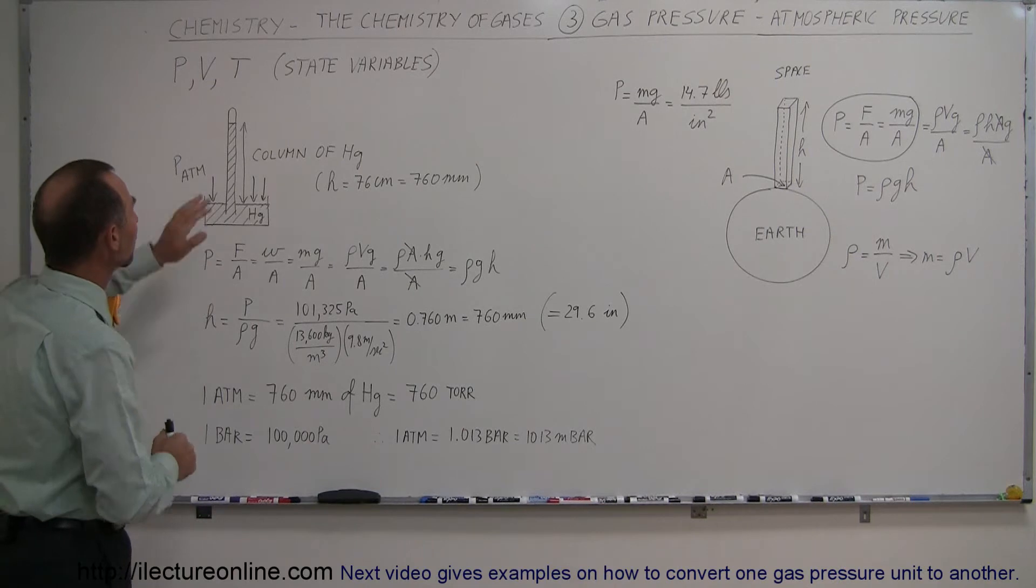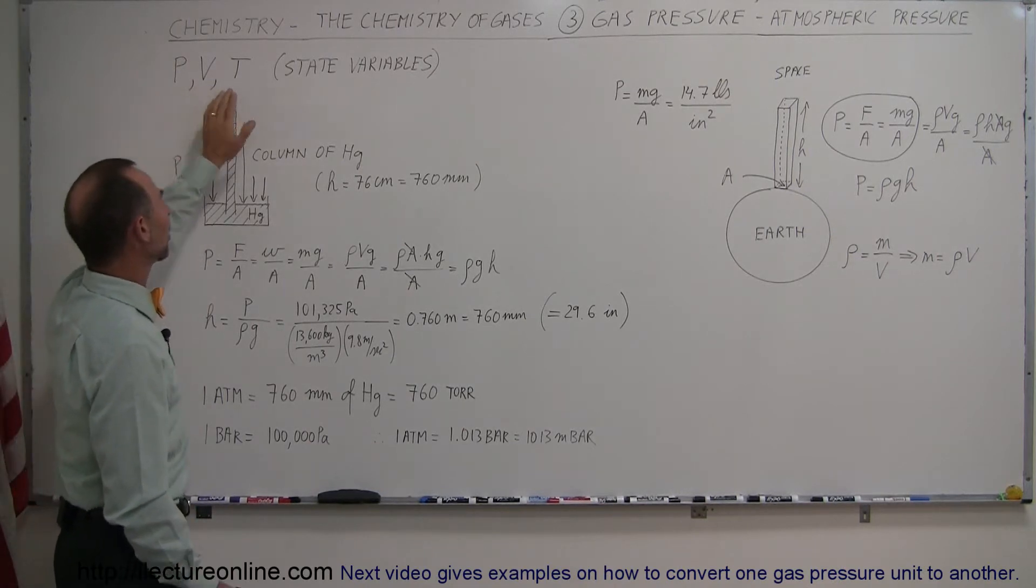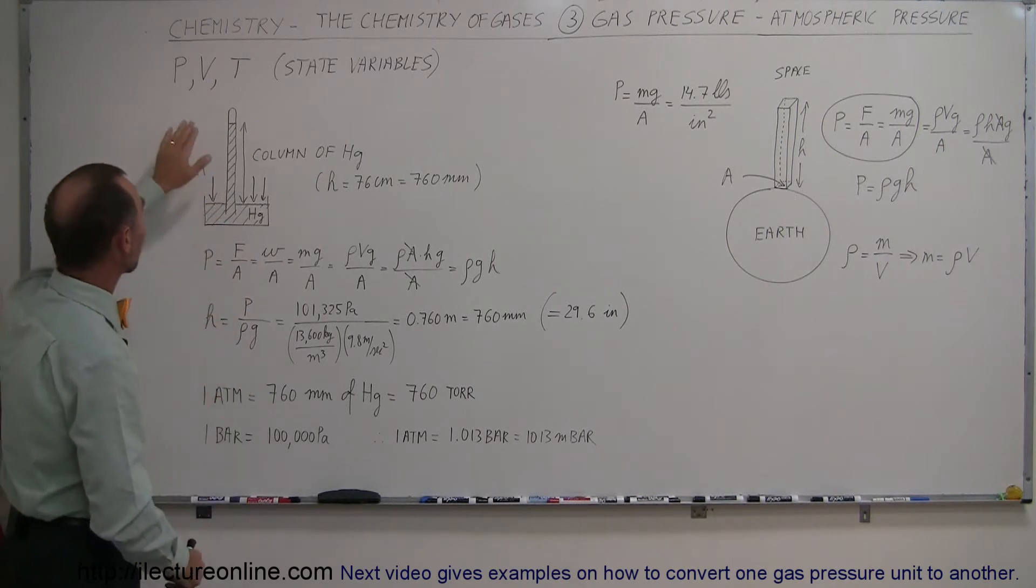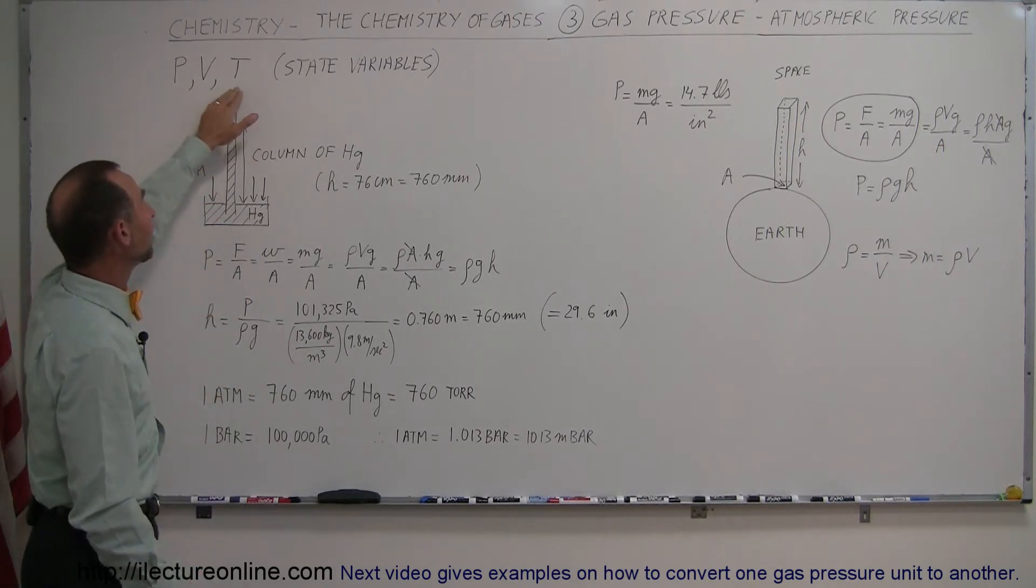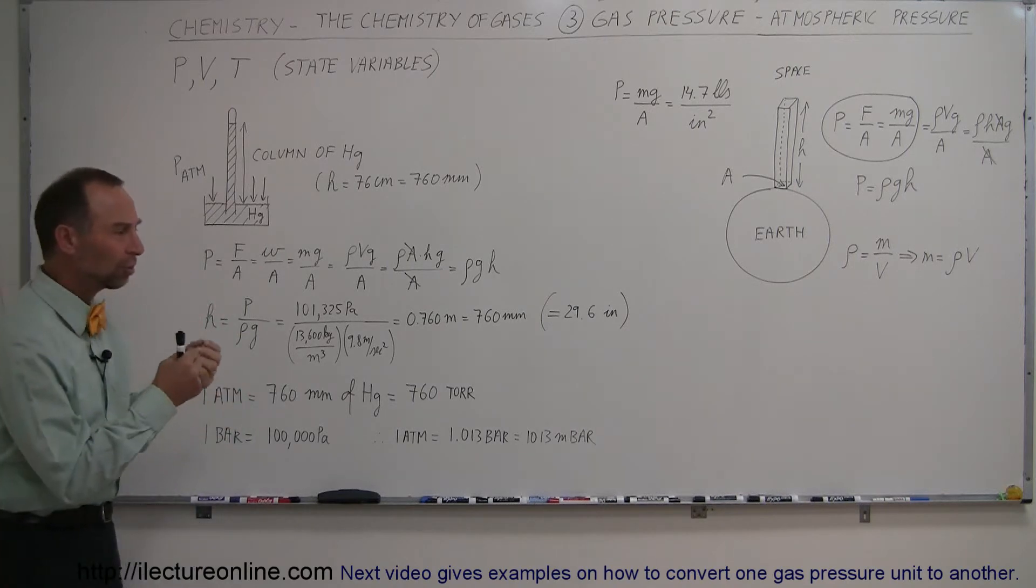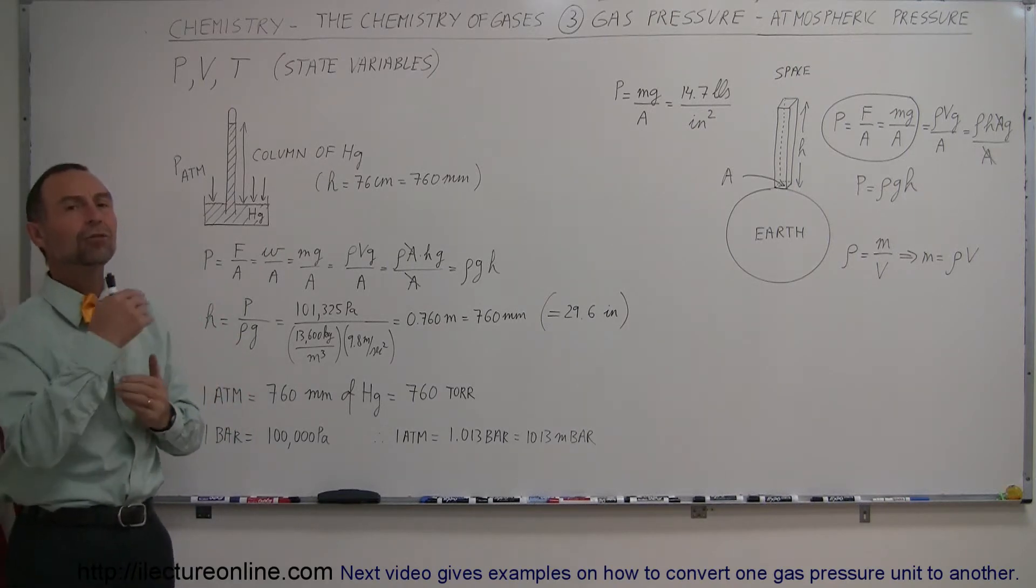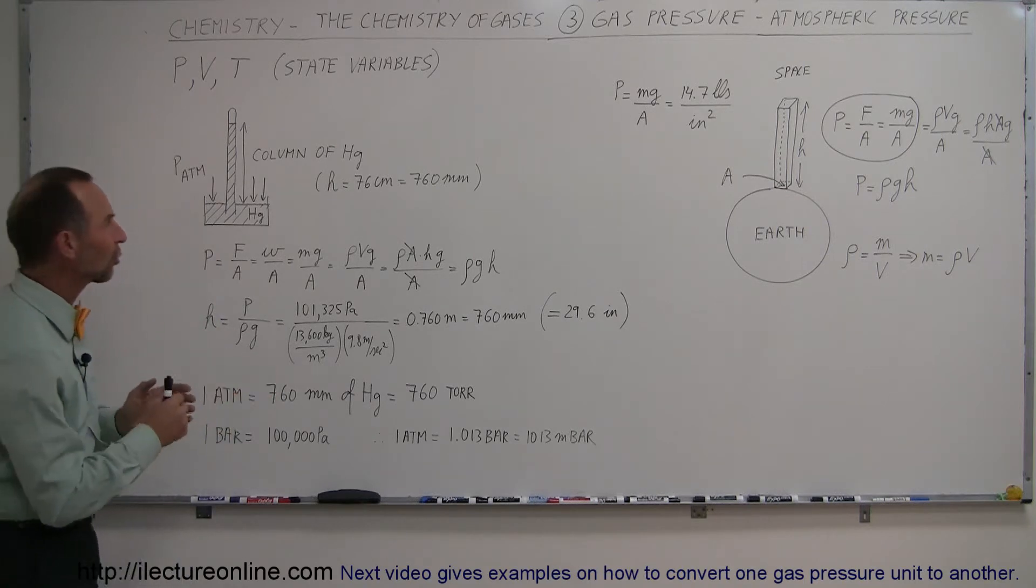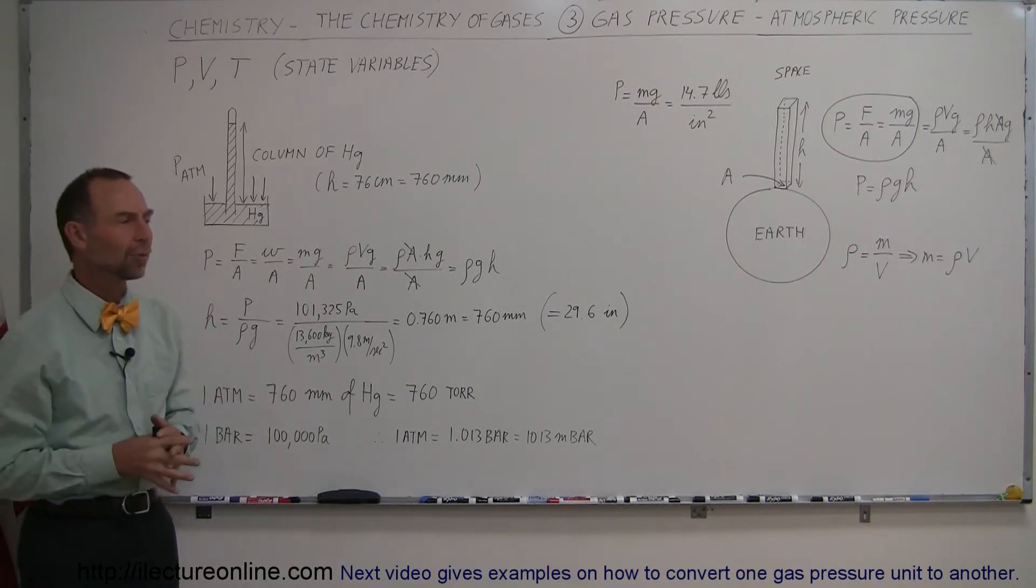So first of all, pressure is one of the three variables that we're going to use to describe gases. Those three variables are pressure, volume, and temperature. Those three variables are called state variables. They explain the state of the gas, and in a future video, we'll go ahead and use the PV equals NRT equation, the ideal gas equation, to describe the relationship between those variables and how to use that in chemistry.